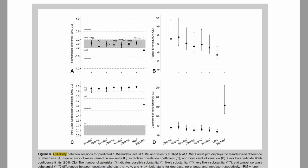They all fall in the grey area, with the exception of the velocity at 1RM which had a small possible decrease from session 2 to session 3. The typical error ranged depending on the model between 5 to 8 kg, with the 1RM showing the best performance and lowest error.